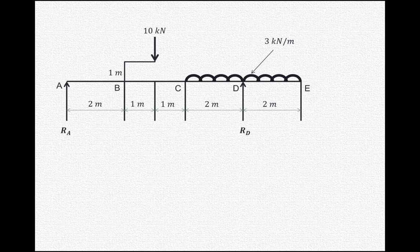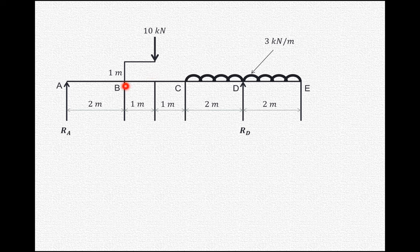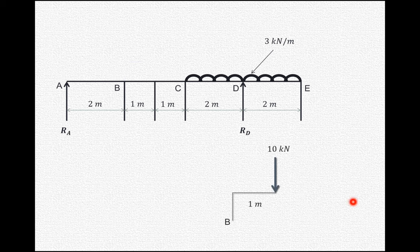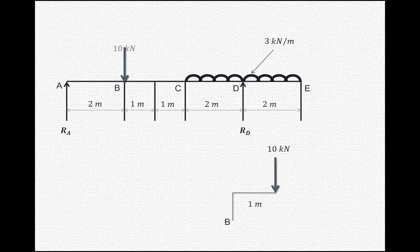First we have to find out the reactions RA and RD. For that we will convert the 10 kN load — it will produce a direct point load of 10 kN at B and a moment, because it is acting towards the right by 1 meter, producing a clockwise moment of 10 into 1, that is 10 kNm at point B.